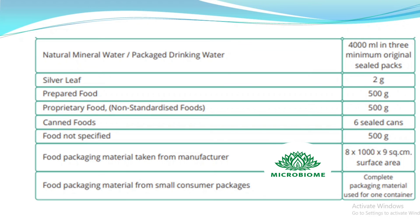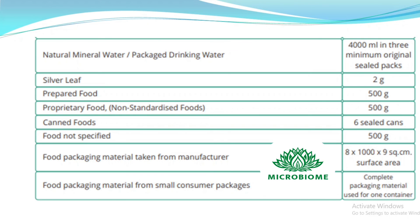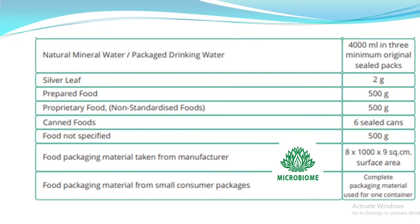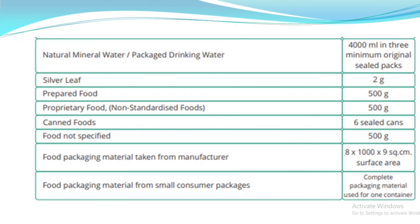Food packaging material taken from manufacturer: 8×1000×9 cm² surface area. Food packaging material from small consumer packages: complete packaging material used for one container.